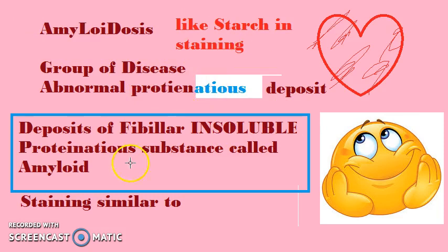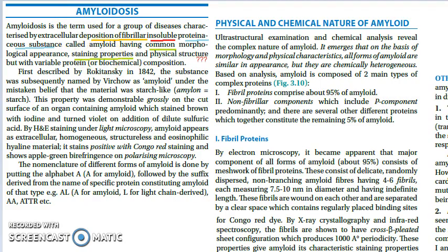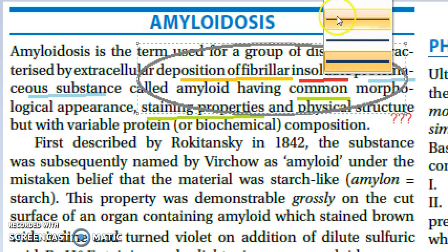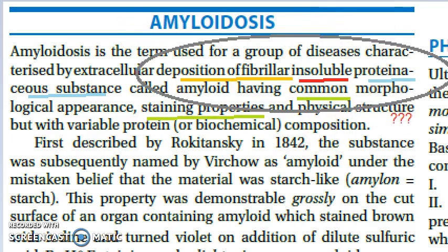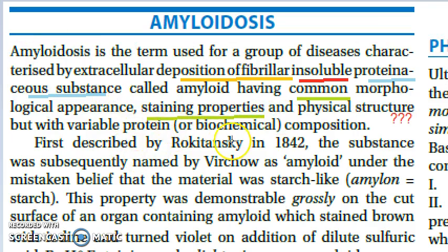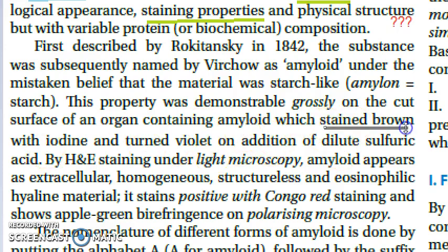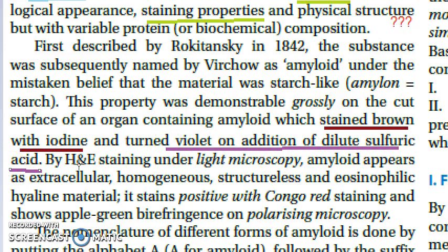Looking at the textbook — Hash Mohan — here is the definition: amyloidosis is a group of diseases characterized by extracellular deposition of fibrillar, insoluble proteinaceous substance called amyloid. It was initially named amyloid by Virchow because the material resembled starch: when you add iodine it stains brown, which turns violet on adding dilute sulphuric acid.